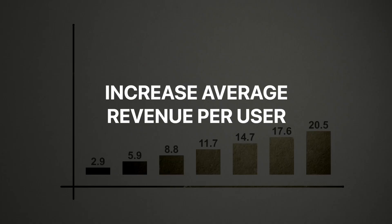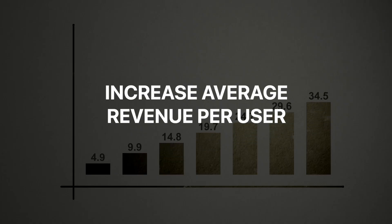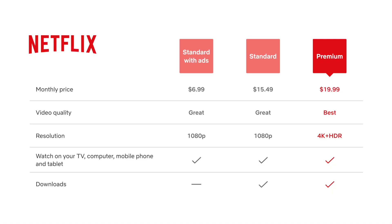Another thing you can do to reduce your churn is increase your average revenue per user. This means finding another way to make more money from your existing users. An obvious one might be if you have that $5 plan and a $20 plan — find ways to convert those $5 people to the $20 plan. That's increasing your average revenue per user.